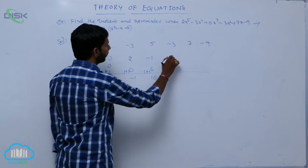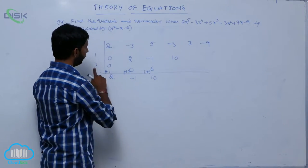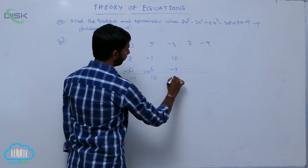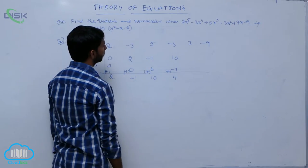10 into 1, 10. 3 into minus 1, minus 3, is equal to 4. Adding all these, and next one.